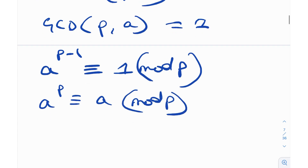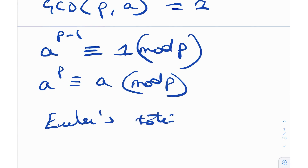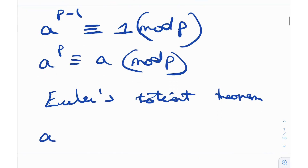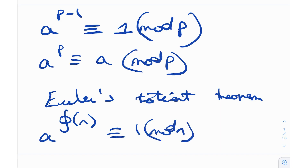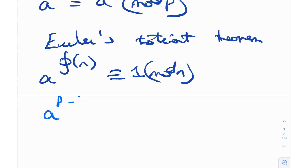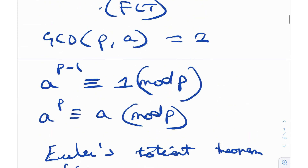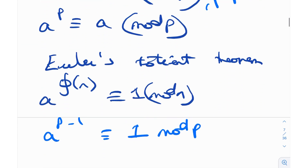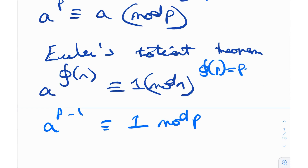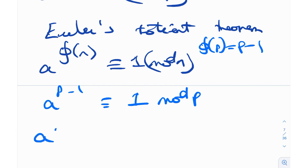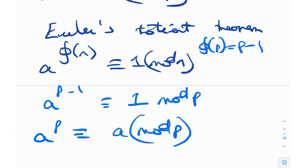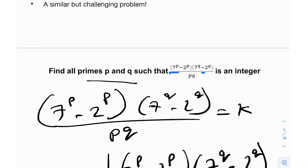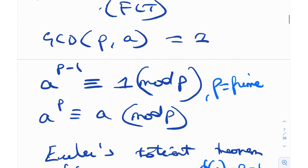This is a special case of Euler's totient theorem, which basically says a^φ(n) ≡ 1 (mod n), where φ(n) is the Euler totient function. For primes p, φ(p) = p − 1, so FLT follows directly. It's a good thing because in this question we have primes p and q, and the numbers 7 and 2 are also prime, so Fermat's Little Theorem is likely going to be used.